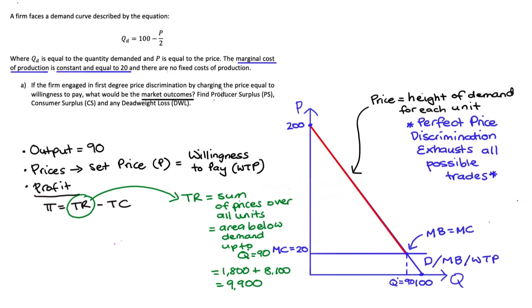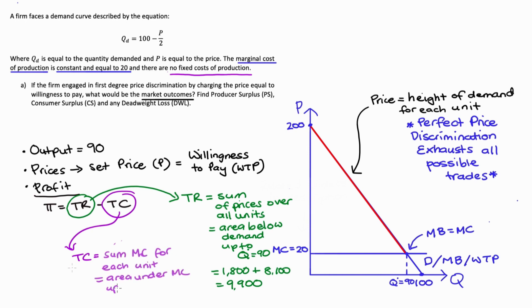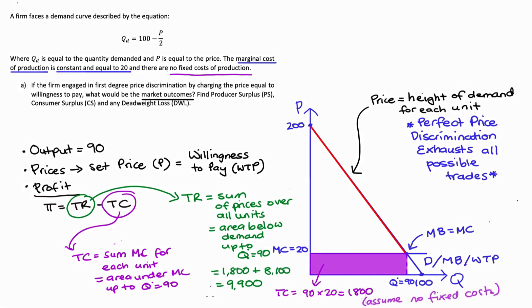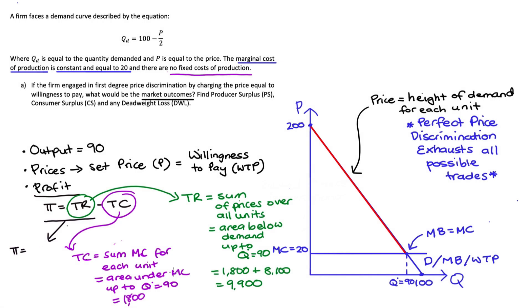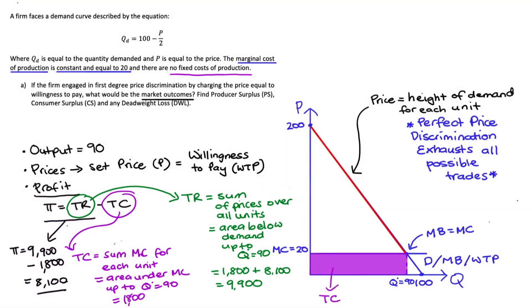Since there are no fixed costs, total cost equals the area under marginal cost up to Q = 90, shaded in purple — that rectangle is 90 times 20 = 1,800. Profit equals total revenue minus total cost: 9,900 minus 1,800 = 8,100. Visually, profit is the difference between the green area and the purple area, colored in orange — that triangle area.